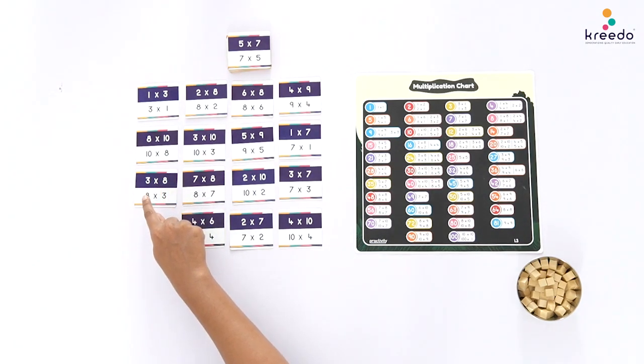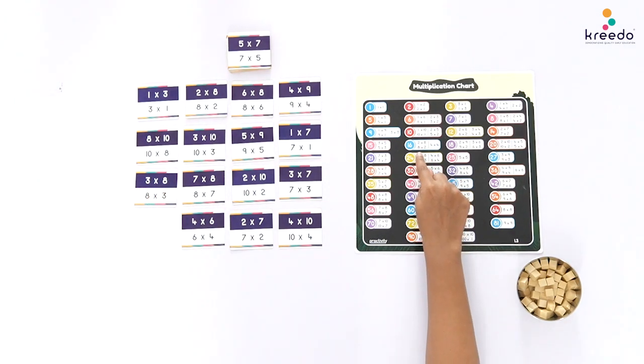3 × 8, 8 × 3. 3 × 8, 8 × 3 is 24. Instruct the child to place one unit cube on the fact 3 × 8 or 8 × 3.